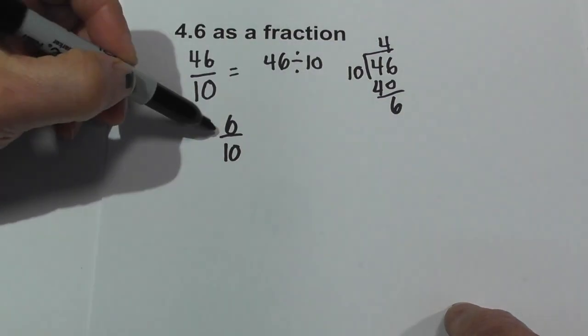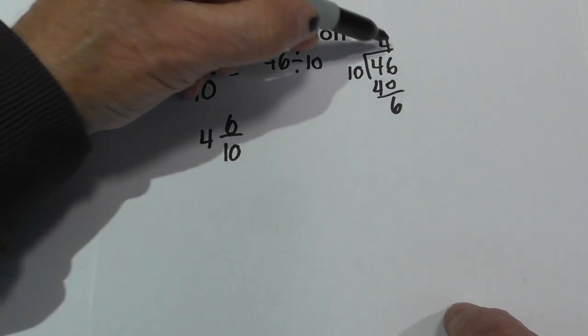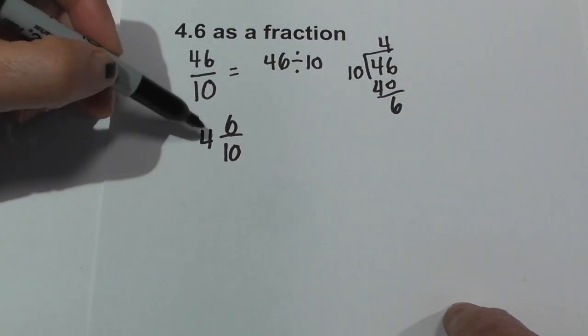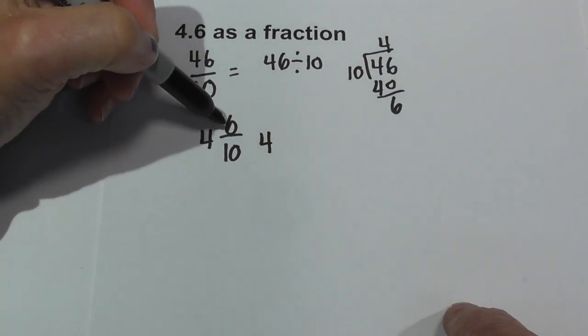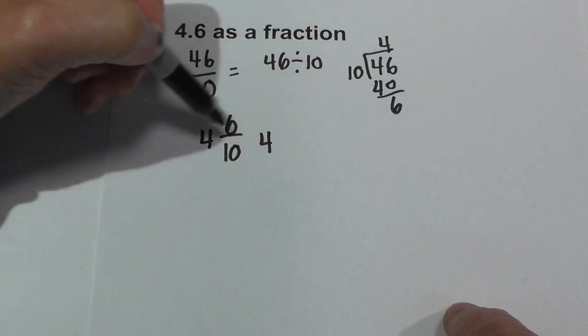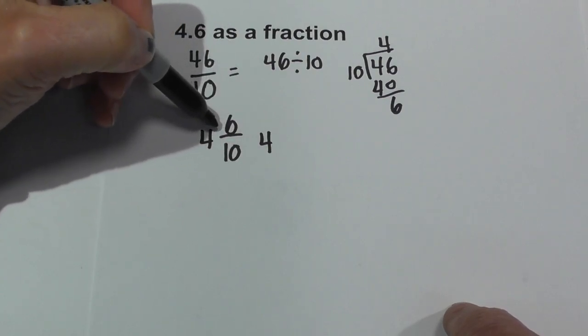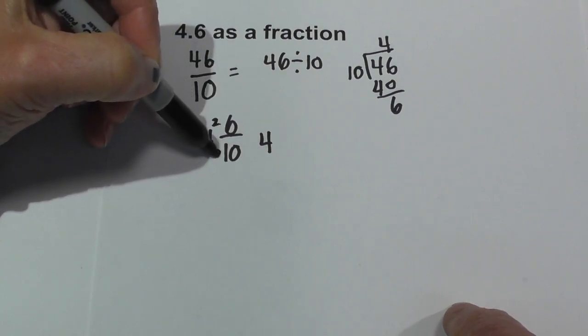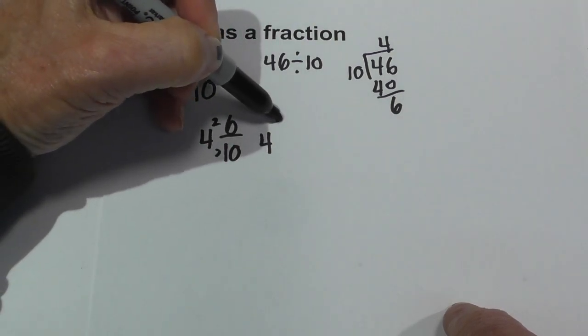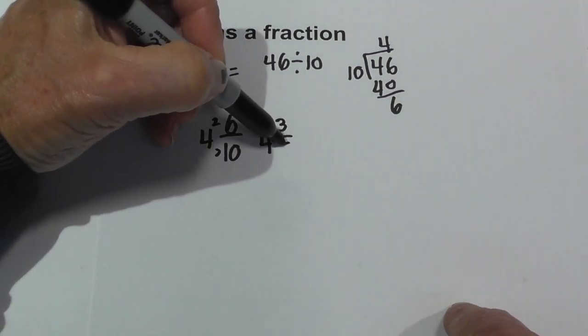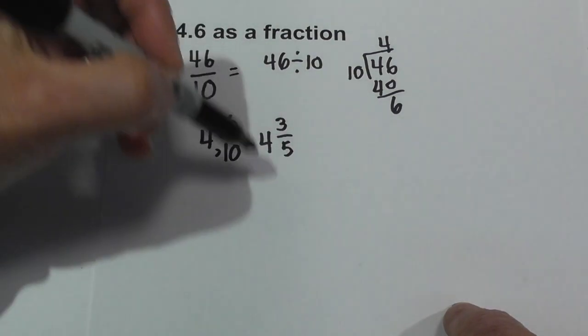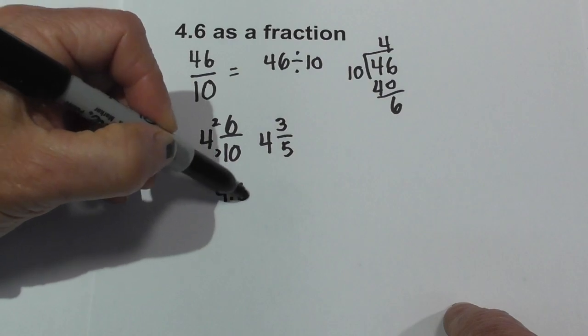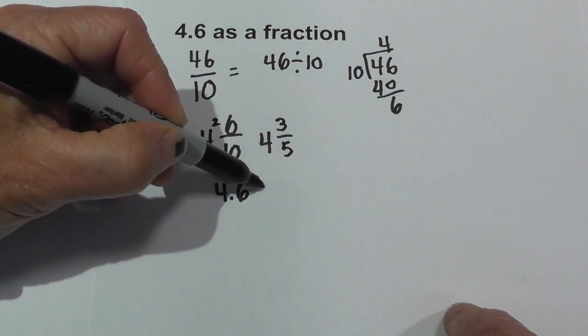And remember we have 4 because that's how many times 10 went into 46. Now we can further reduce this down because 2 will go into 6 and 10. So 2 goes into 6 three times and 2 goes into 10 five times. So 4.6, if you want to write it as a fraction, is equal to 4 and 3 fifths.